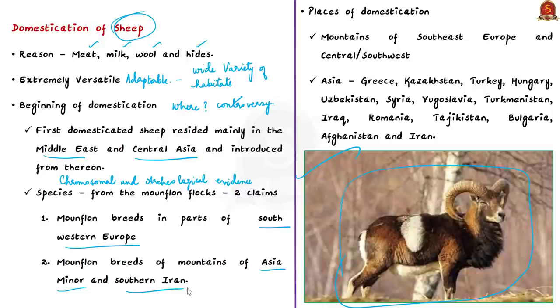Generally, they say that domestication started from the mouflon breeds in parts of southwestern Europe or in the mouflon breeds of mountains of Asia Minor and southern Iran. On the whole, it was claimed that sheep domestication happened in the mountains of southeast Europe and in central or southwest Asia. These areas include countries like Greece, Kazakhstan, Turkey, Hungary, Uzbekistan, Syria, Yugoslavia, Turkmenistan, Iraq, Romania, Tajikistan, Bulgaria, Afghanistan and Iran.